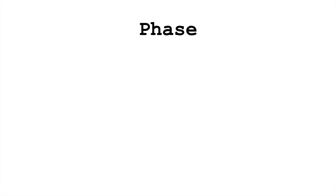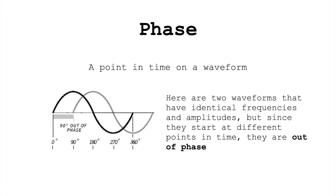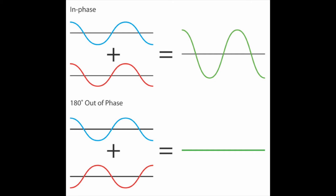Phase literally is just a point in time on a waveform. Two sounds that have a different phase actually sound identical, but when you start to combine sounds, the phase becomes important. Two sounds that are exactly in phase will result in a doubling of volume, whereas when you add two sounds that are out of phase, you're going to have different patterns of constructive and destructive interference occurring.